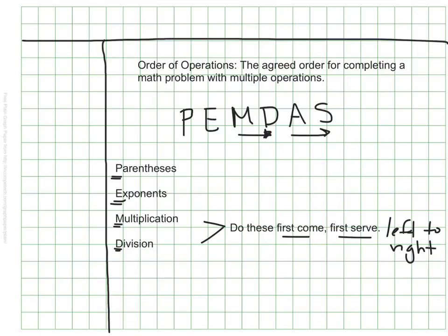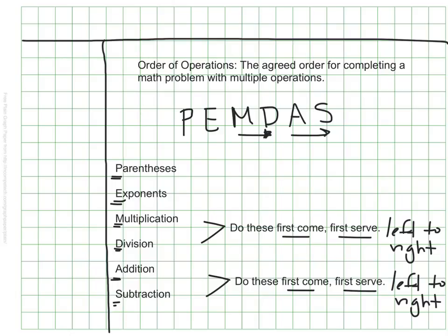You can probably guess then what our A and our S stand for. These, of course, represent addition and subtraction. And addition and subtraction have that same arrow underneath. We also do these first-come, first-served or left to right. So if we see adding and subtracting in the same problem, we'll do whichever one we see first. All of these letters together form the acronym PEMDAS.